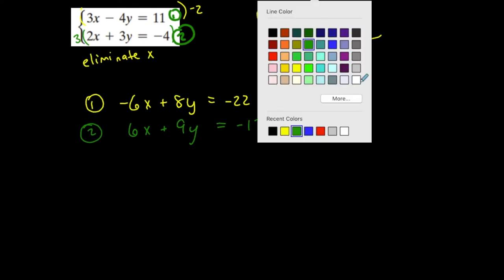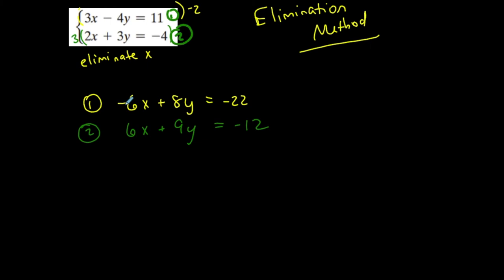So I have 6x plus 9y is equal to negative 12. So once I have them lined up like this, and I have the same number in front of each variable, or the variable that I'm choosing to eliminate, the same number but opposite signs, now I can add. This is why this is also called the addition method.